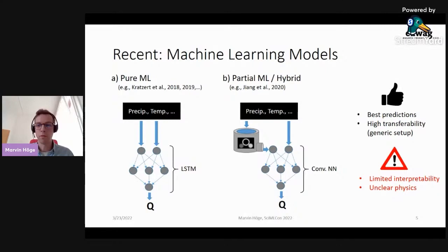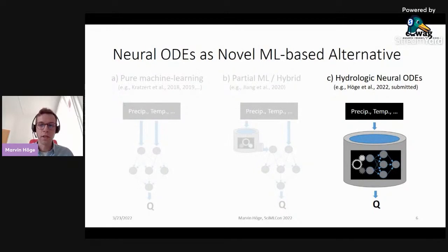Compared to that, our hydrologic neural ODE approach is also somehow hybrid, but stays within the conceptual model framework. To the ODE basis, we add the flexibility of the neural network and can thereby avoid fixed assumptions about processes or potential limitations within the model.